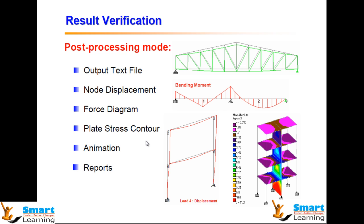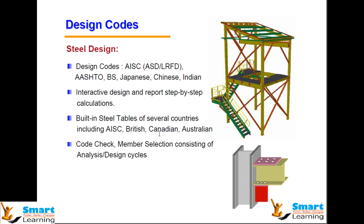Result verification can be done through post-processing, where you check whether allowable deflections are permitted or not. You can visualize the bending moment and shear force (BM and SF) diagrams, see stress contours, view animations, and generate a report to match with the safe code data and validate your model. Different design codes based on different countries — India, Japan, and Britain each having their own standards — are supported. You can match hand calculations with the STAAD report output, which is fundamentally very important. Built-in steel tables for Indian, British, and other countries are available for code checking.